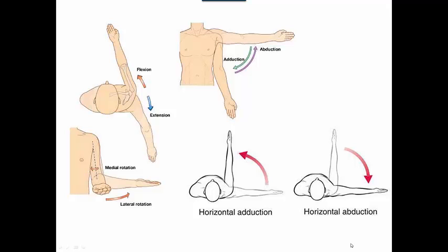As we set up studying for the shoulder complex, all the muscles and functions, let's start with the motions. The shoulder complex is made up of many joints. The one that does the major motion is the glenohumeral joint. So let's first look at the major motions of the glenohumeral joint.